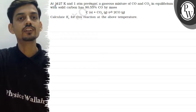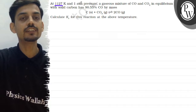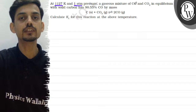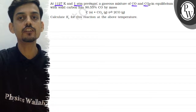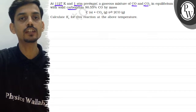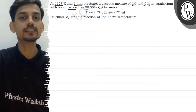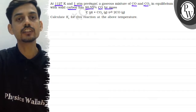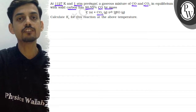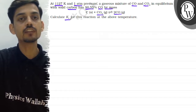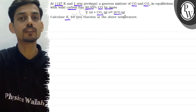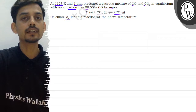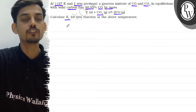The question states: at 1127 Kelvin and 1 atm pressure, a gaseous mixture of CO and CO₂ in equilibrium with solid carbon has 90.55% CO by mass. The reaction given is C(s) + CO₂(g) → 2CO(g), and we have to calculate Kc for this reaction at the above temperature. Since percentage mass composition is given, we can assume the total mass is 100 grams.